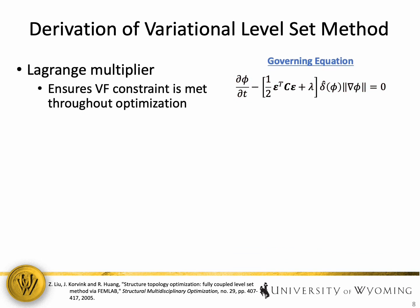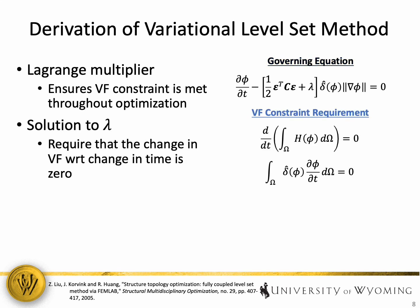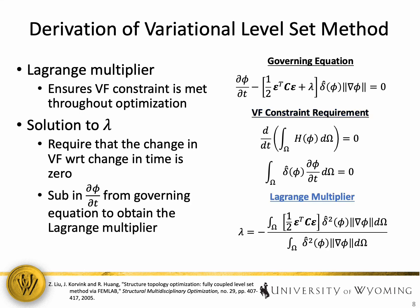Now within the governing equation, most of the terms are defined. However, we still don't know what the Lagrange multiplier should be. The purpose of the Lagrange multiplier is to ensure that the volume fraction constraint is met throughout the optimization process. Therefore, in order to solve for our Lagrange multiplier, we require that the change in volume fraction with respect to the change in pseudo time is zero. What this does is ensure that throughout each iteration of the optimization process, the volume fraction constraint is met. From there, we can plug the governing equation into our volume fraction constraint requirement equation and then ultimately solve for the Lagrange multiplier, which is given by the equation on the bottom right.